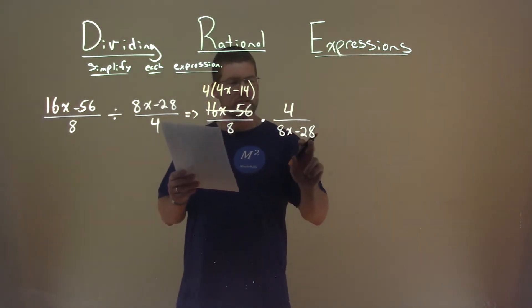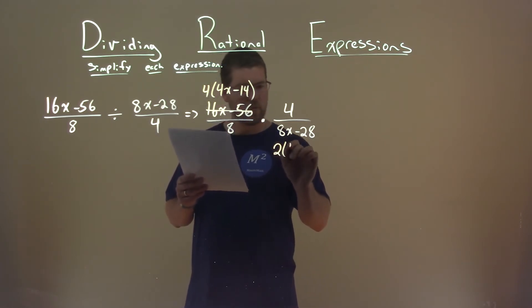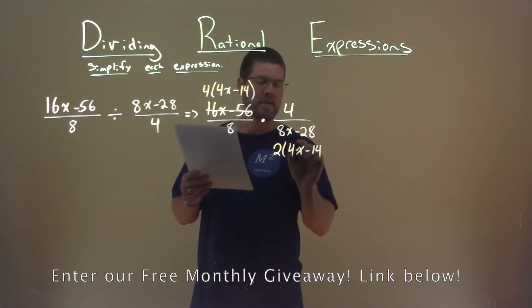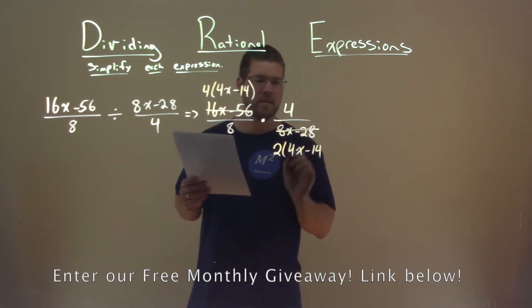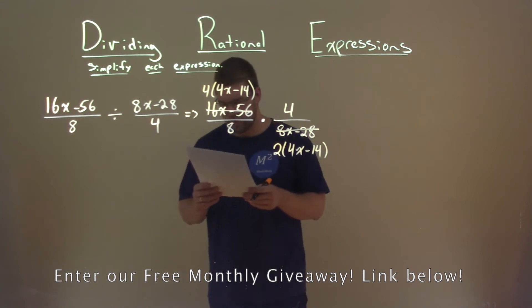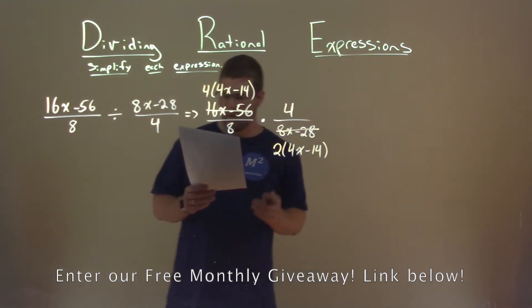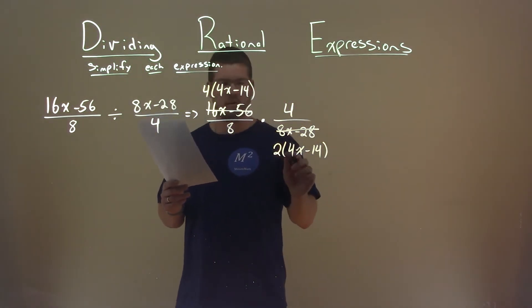I'm going to pull out a 2 here in this denominator. By doing that, I'm left with 4x minus 14. So 8x minus 28 is replaced with 2 times 4x minus 14. Now you can see why I left it in that form, or didn't factor all the way.